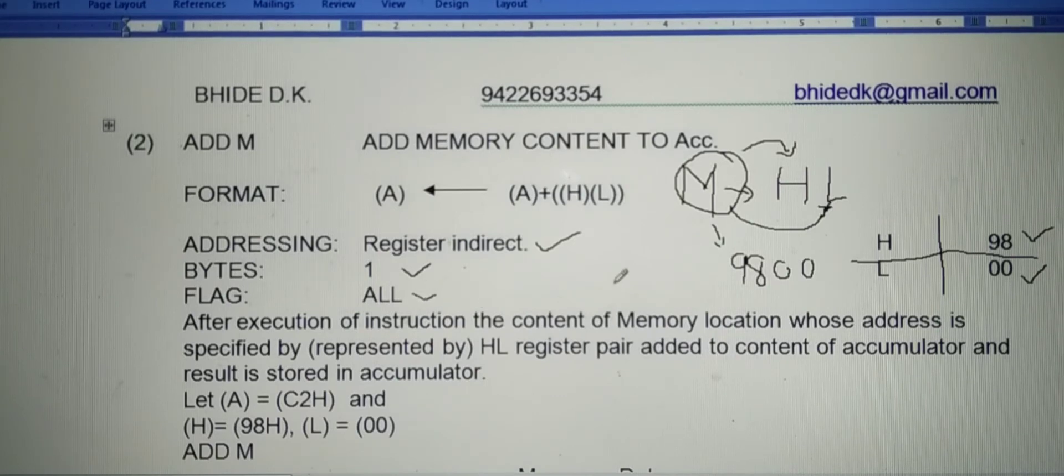After execution of the instruction, the contents of memory location - the number stored in that memory location where H and L together represent the memory - gets added to accumulator and result is stored in accumulator.